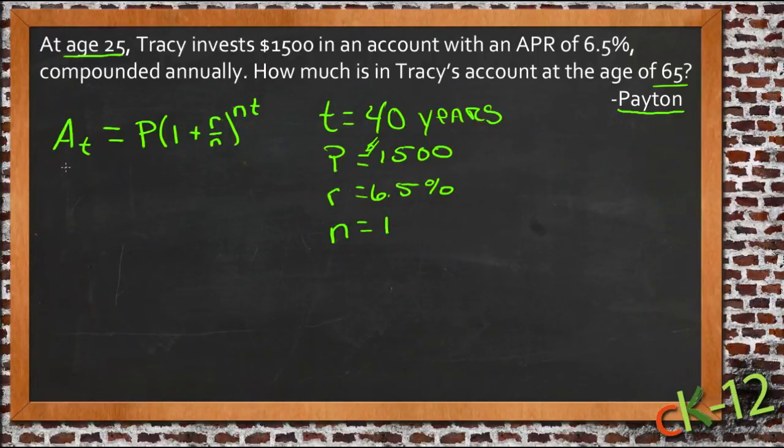Now the formula we use to calculate that is the amount total, A_T, so the amount total, the amount that you end up with, is equal to the principal times 1 plus the rate divided by the number of compounds, raised to the power of n times t. What that means is we take the amount of money that we started with, and we're going to multiply it by 1, so that we get that amount of money, and in addition, we get whatever the rate is, so in this case 6.5% of that money, and we divide that by the number of times it's compounded each year.